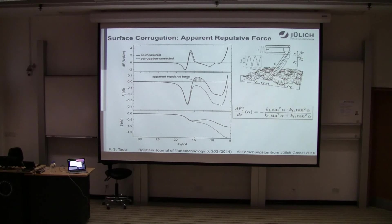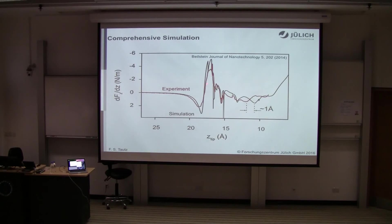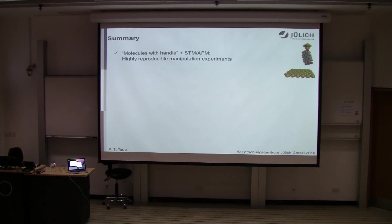Once this problem is identified, we can calculate the correction. We produce simulated curves which in all generic properties fully reproduce what the experiment shows — the experimental red curve and the black simulated curve show excellent agreement in overall shape, including the jerky events and the broadness of the peak. We have a valid description of the full manipulation process.